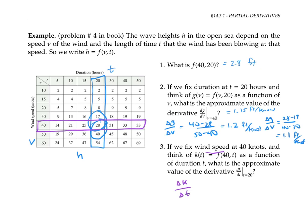If we use these two numbers here, we get the change in k is 31 minus 28, and the corresponding change in t is 30 minus 20. This calculates to 0.3 feet per hour. Or we can use these two numbers and get (28 minus 25) divided by (20 minus 15), which gives us 0.6 feet per hour. Taking the average, we get 0.45 feet per hour as our best estimate of the rate of change of f in the t direction when we fix v at 40.